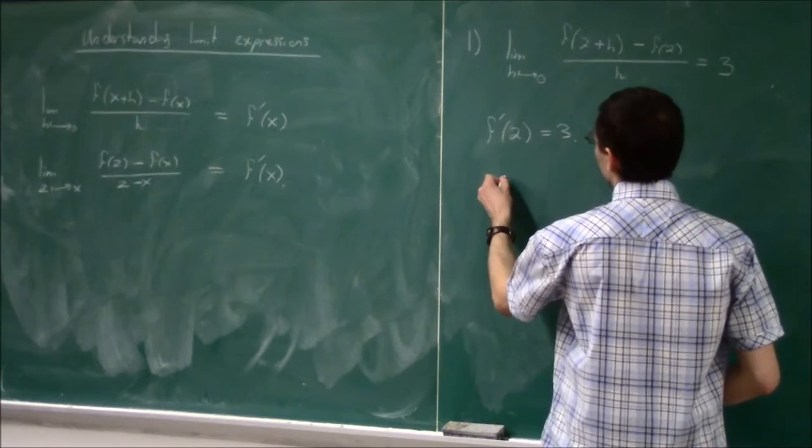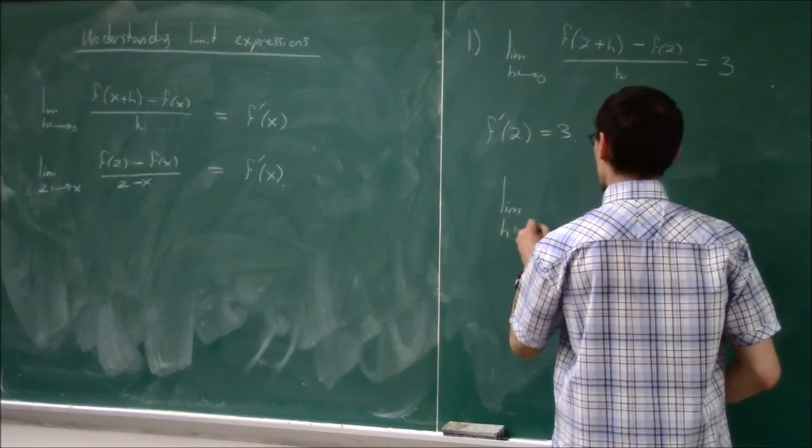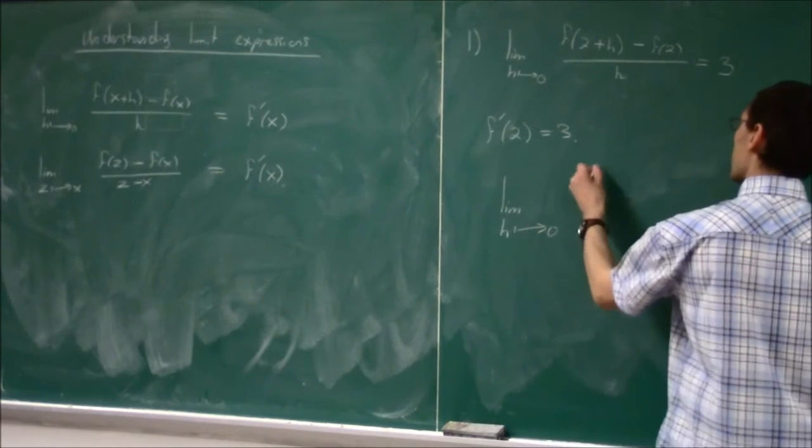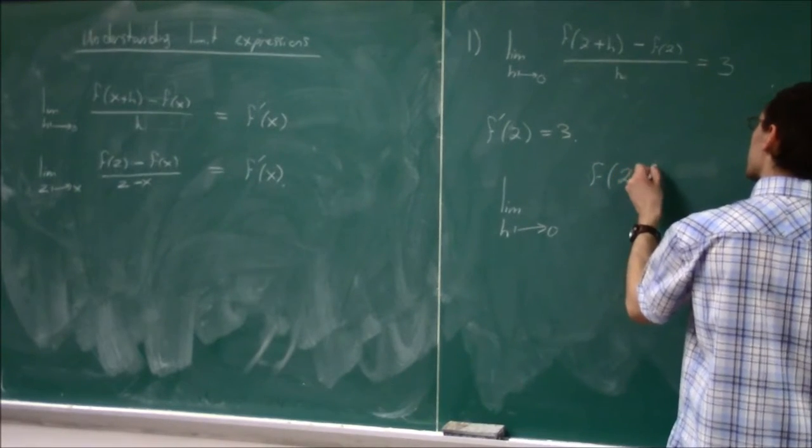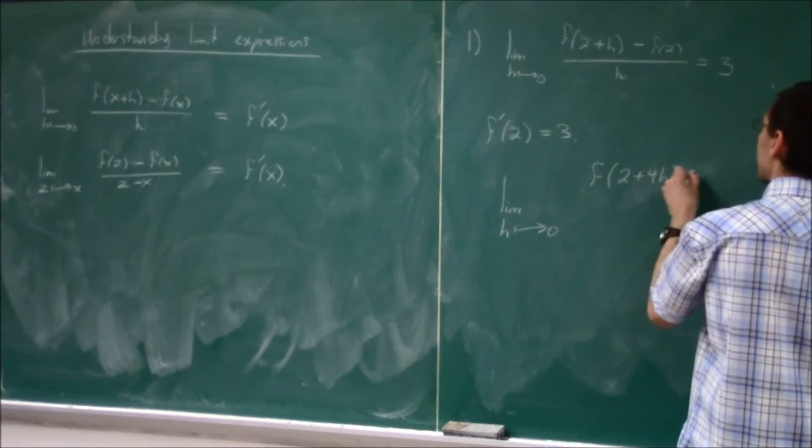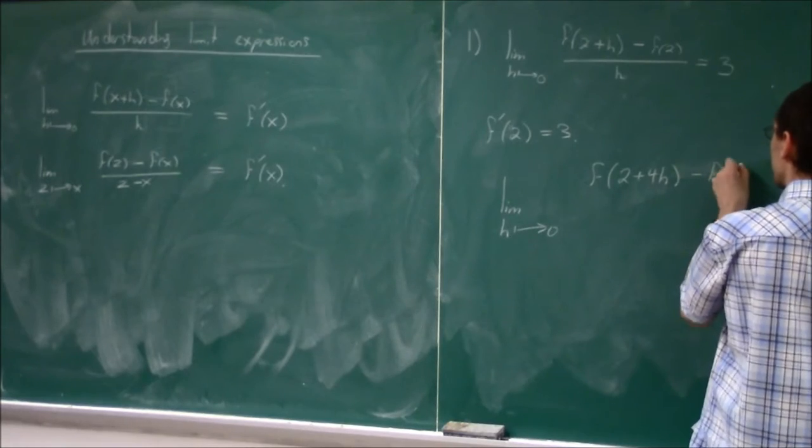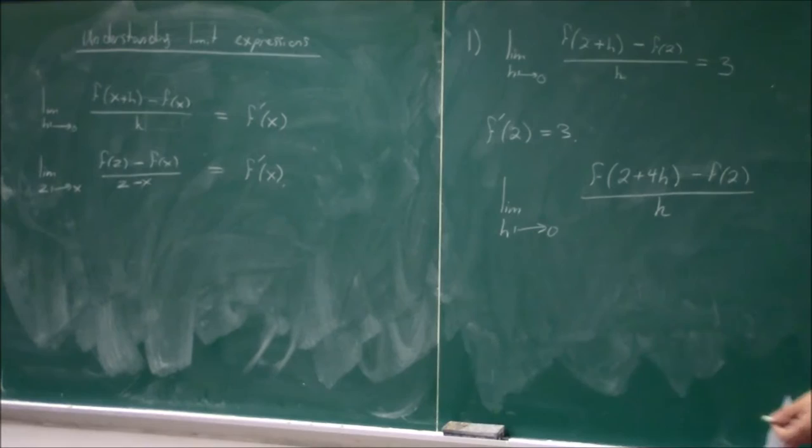Now what happens if I modify this limit? Suppose now I have limit as h goes to 0 of f(2+4h) - f(2) divided by h. So what happens now?